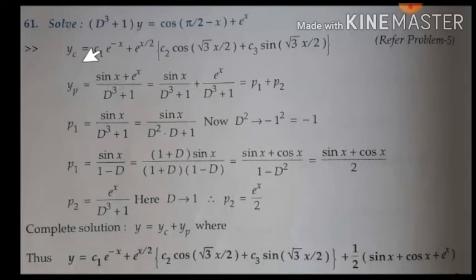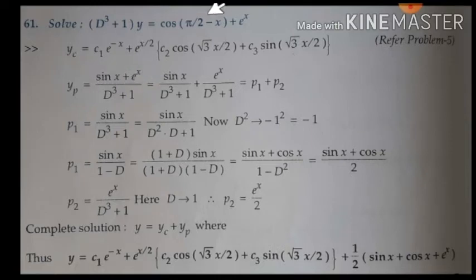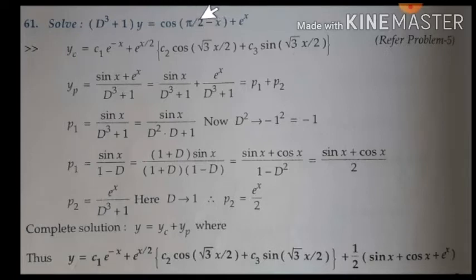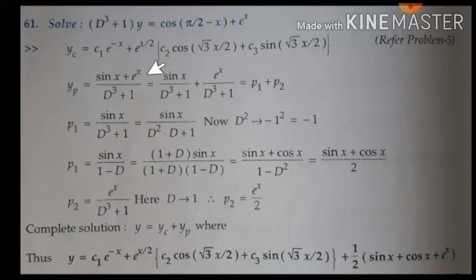Now we find out the particular integral using inverse differential operator 1 by f(d) plus 1. We know that cos(90° − θ) is nothing but sin θ, so convert it — otherwise it is difficult to take out the 'a' value. Since it is in the first quadrant, the trigonometric function will change for 90°: cos becomes sin, and since it is in the first quadrant you get the positive value — positive sin x. So cos(90° − x) is sin x, plus e to the power of x as it is.